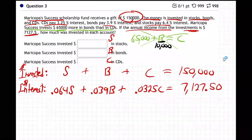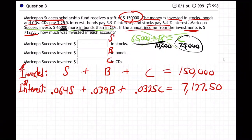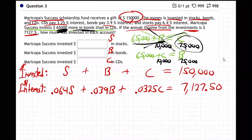For example: what if there were $10,000 in bonds? Using the wrong equation, CDs would be $10,000 + $65,000 = $75,000 — that means CDs are more than bonds, which is the opposite of what the problem says. So that's wrong. The correct equation is: 65,000 + C = B. Check it: if C is $10,000, then B = $75,000, which is $65,000 more in bonds. That fits.